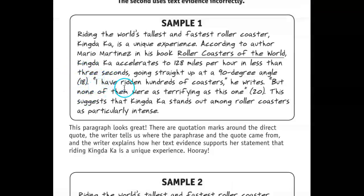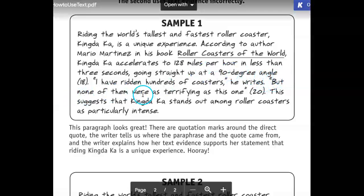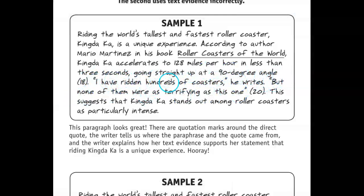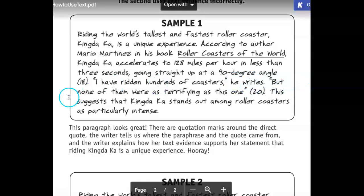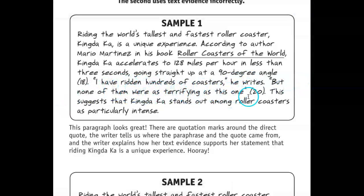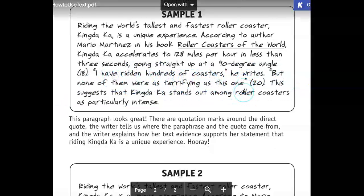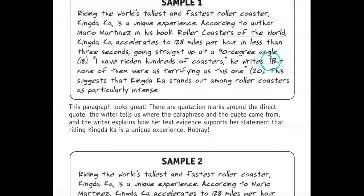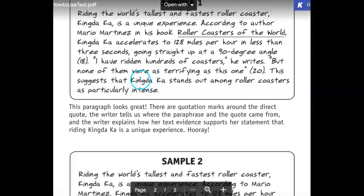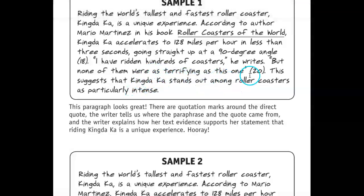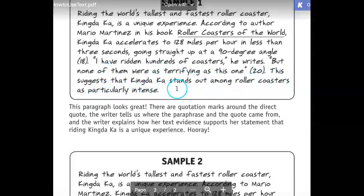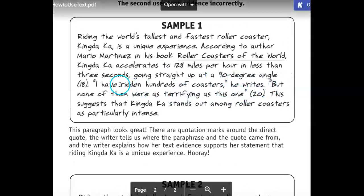Quote: 'I have ridden hundreds of coasters,' he writes, 'but none of them were as terrifying as this one' — from page 20. It's a longer quote but it's okay. Notice the citation word 'he writes' and the page number it comes from. 'This suggests that King Dakar stands out among roller coasters as particularly intense.'